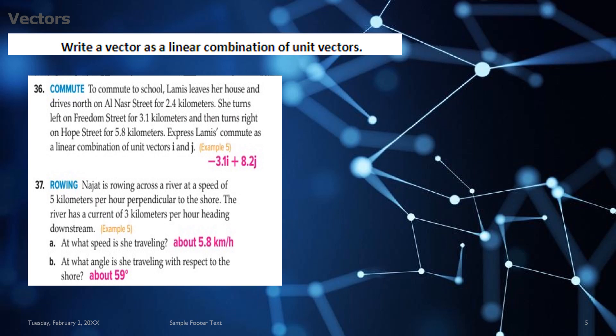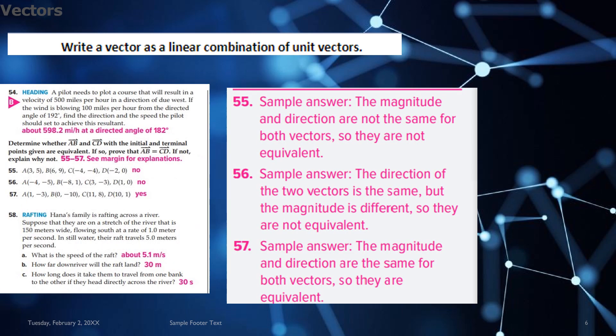Then again, for questions 36 and 37, where you need to write a vector as a linear combination of unit vectors, the answer is provided in pink color. So you can check your answer from this answer key. For questions 95 to 97, again, the solutions are provided here.